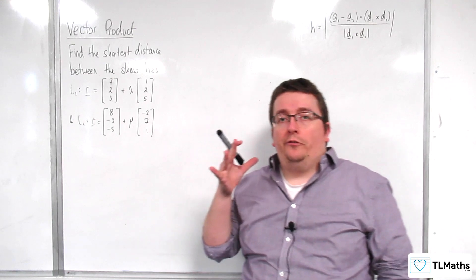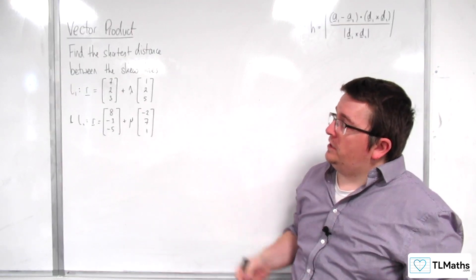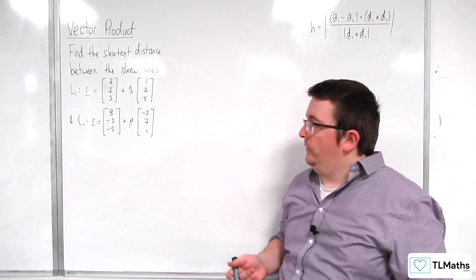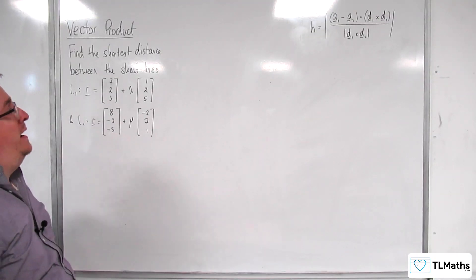So, in this video, we're going to use the formula that we derived in the previous video to find the shortest distance between these two skew lines. Okay, so it's really just identifying which pieces we have.